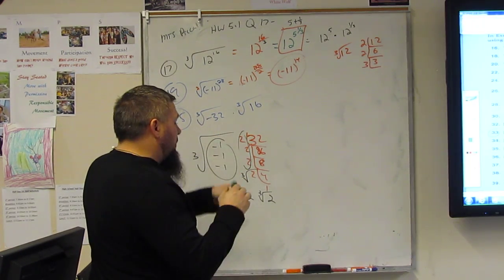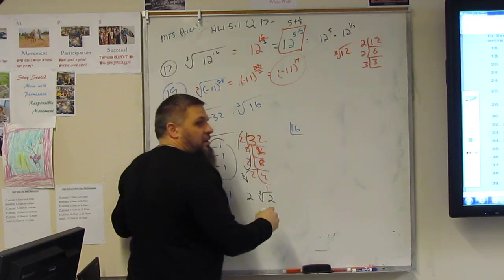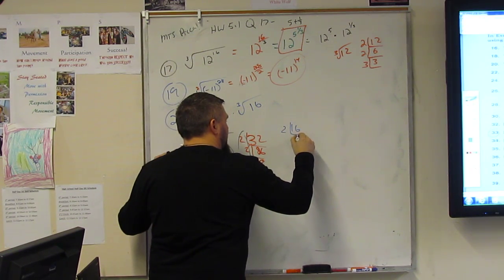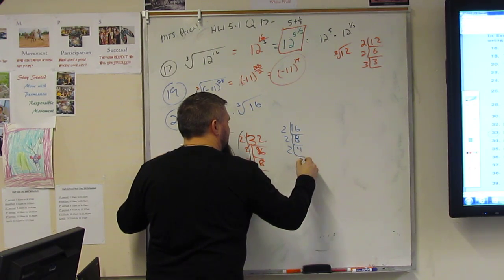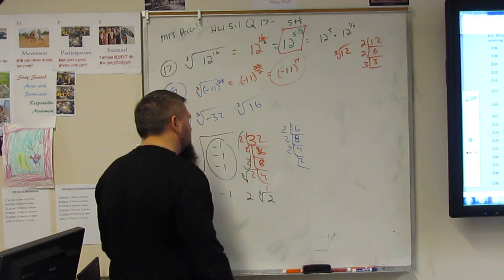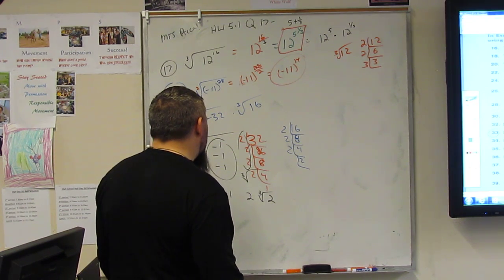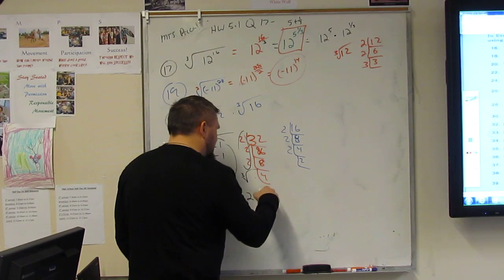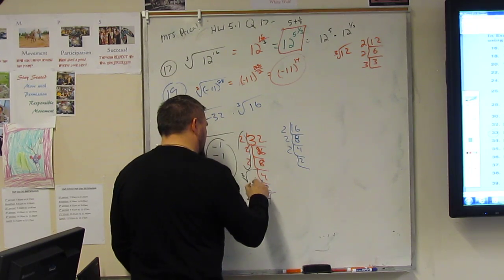And then we have 16 here. We're going to break the 16 down. So that's 2 is 8, 2 is 4, and 2 is 2. Did I mess up? My bad. This should be 4. This is 2 and 2. This should be 4. I know. I didn't mess up. It should be 2 2s in there, right?